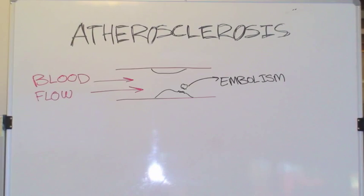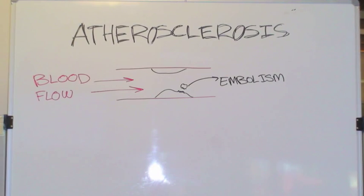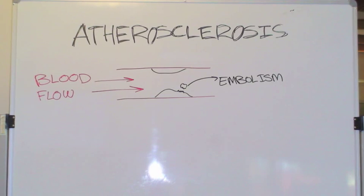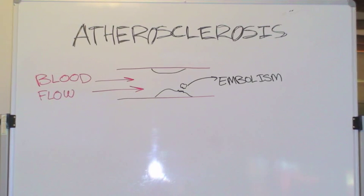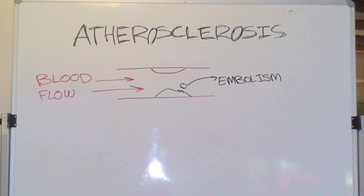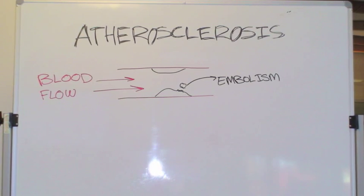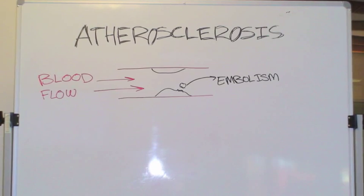Finally, embolisms of plaque or coagulated blood form at the atherosclerotic site and may break off and occlude vessels in other areas of the body, such as the carotid or coronary arteries. This may lead to heart failure or a stroke.